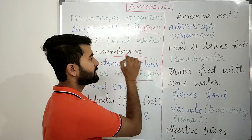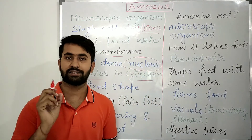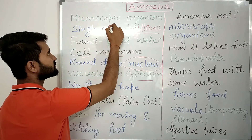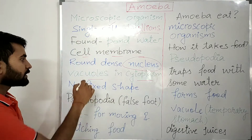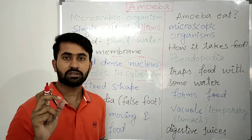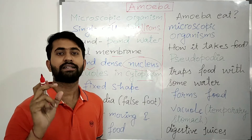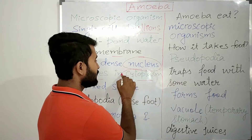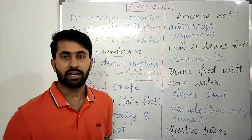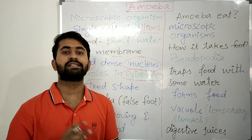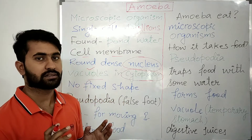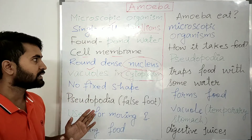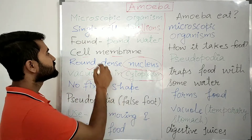Similarly, the nucleus present inside the cell controls all the functions of the cell. Vacuoles means empty spaces. And the cytoplasm is a gel-like substance that is present inside the cell membrane.